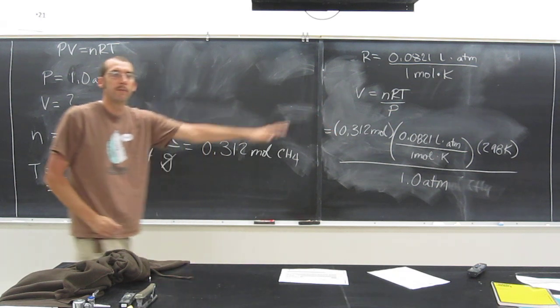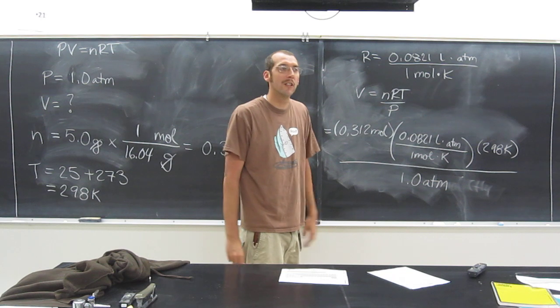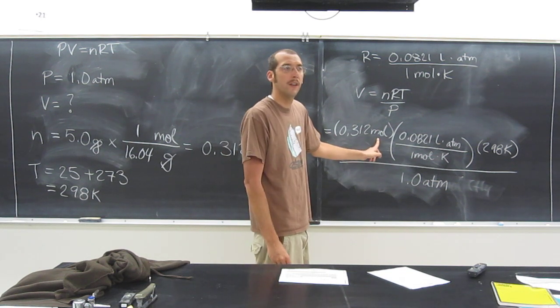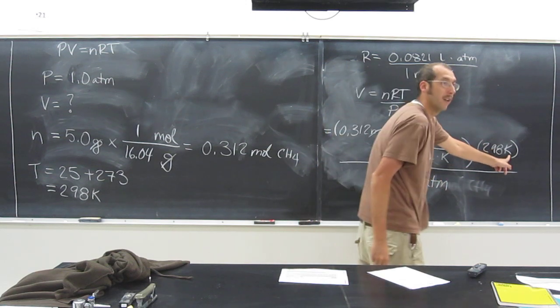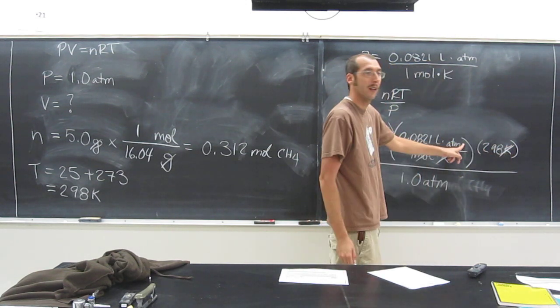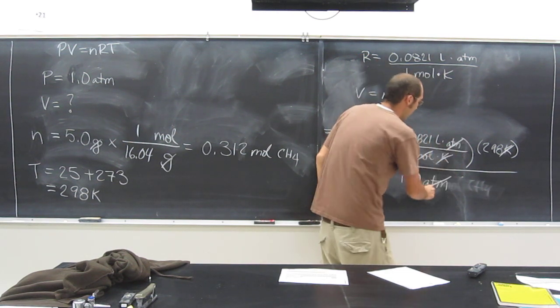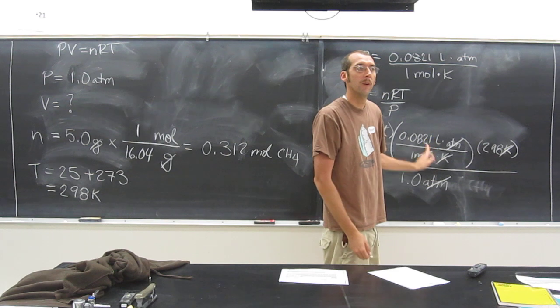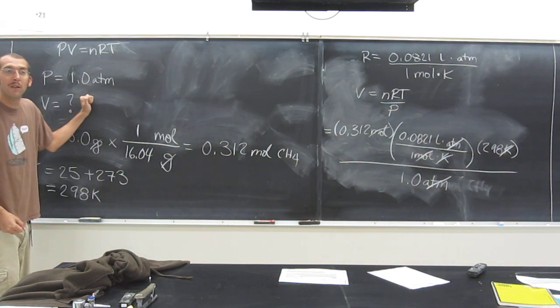Is everybody cool with that? So now what are we going to do? Cancel our units. Hopefully we get liters. Moles on the numerator. Moles on the denominator. Cancel, cancel. Kelvin numerator. Kelvin denominator. Cancel, cancel. ATM numerator. ATM denominator. Cancel, cancel. What are we left with in the numerator? Liters. Is that cool? Because we're looking for volume.